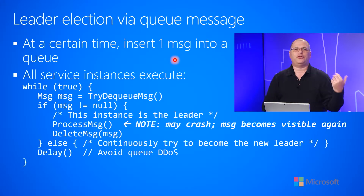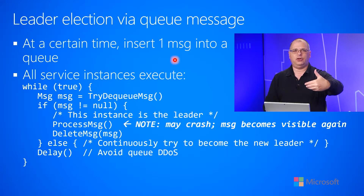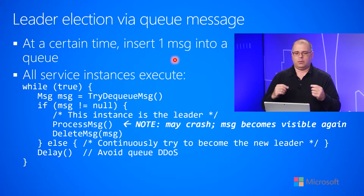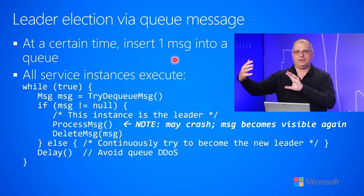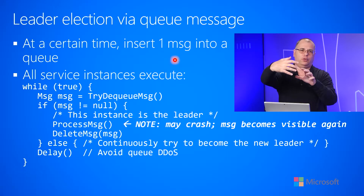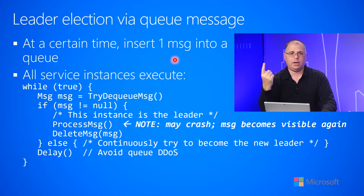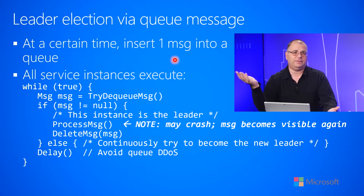Then some external force can go and insert a message into the queue at a certain time. That message could say, I need the billing report produced now. You put one message in the queue, the 10 instances are now going to race to grab it, and the queue will give that message to one and only one of those instances. That instance is effectively the elected leader.